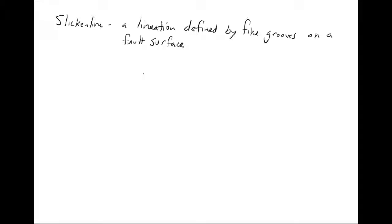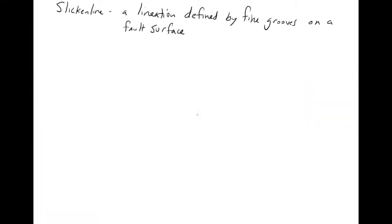So another type of lineation is a slicken line. So this is a lineation defined by fine grooves on a fault surface. I'll show a picture of this later, but faults are planes and then they'll basically be scratched or veins will form and these will have sort of lines that indicate the direction that the fault is moving.